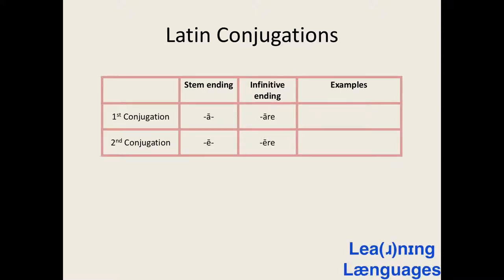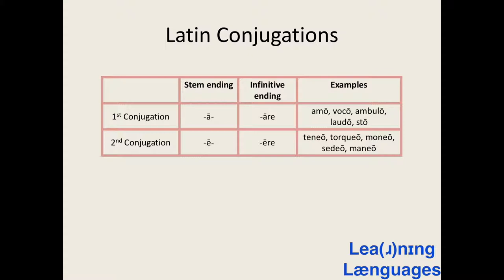So far we've looked at the present tense forms of the first and second conjugations. The first conjugation has a stem that ends in a long A and a present tense infinitive that ends in -are. The second conjugation has a stem that ends in a long E and a present tense infinitive that ends in -ere. Here are some verbs that we've learned before and some you might not be familiar with — they are all first or second conjugation verbs.